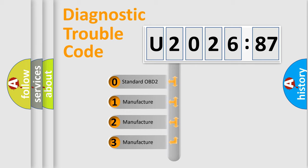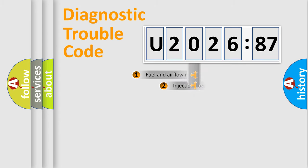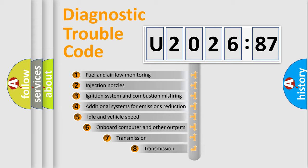If the second character is expressed as zero, it is a standardized error. In the case of numbers 1, 2, 3, it is a more specific expression of the car-specific error.